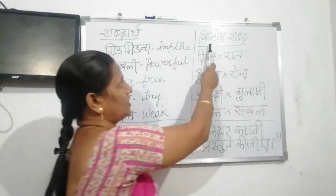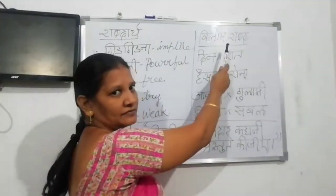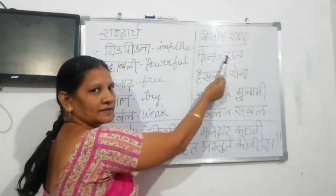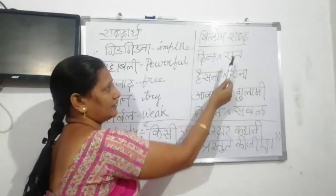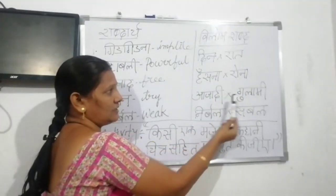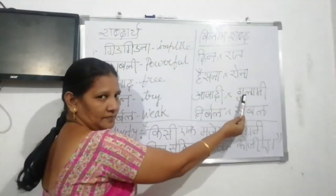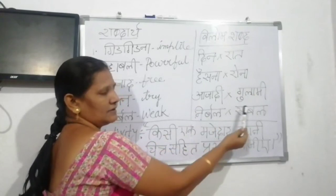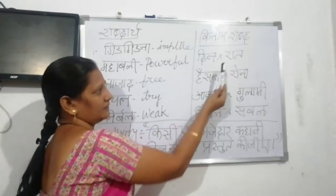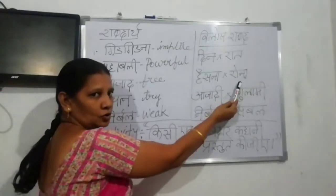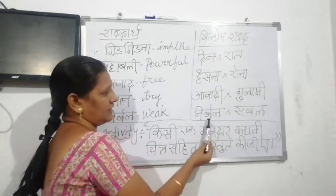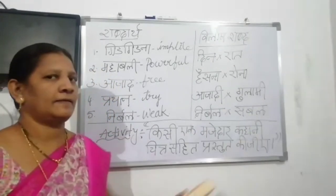Vilom Shabd means opposite words. Din — Raat. Hasna — Rona. Aazadi — Gulami. Nirbal — Sabal. These are the opposite word pairs: Din/Raat, Hasna/Rona, Aazadi/Gulami, Nirbal/Sabal.